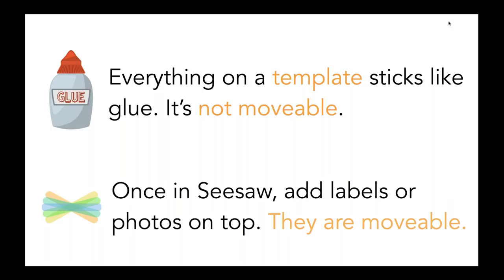So when it goes into Seesaw and you've added it as a template, then when you add labels or photos on top of it, that's where the movable parts come in. I've seen teachers create really elaborate movable pieces in Google Slides, but if you try to get that into Seesaw, it's not going to work. If you're using an outside source like Google Slides, Google Drawings, or Canva, you're basically creating a background image that you will be downloading. So keep that in mind.